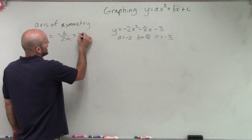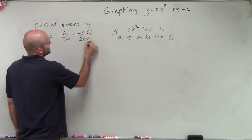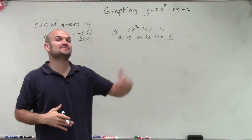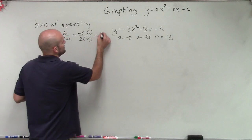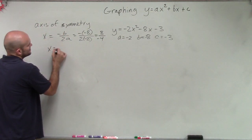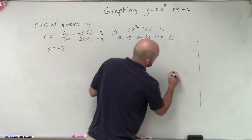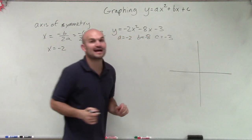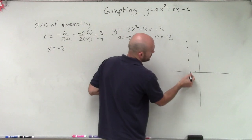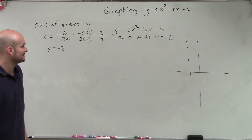So we have the opposite of negative 8 divided by 2 times negative 2. Notice it's opposite of b — since b is negative, it's opposite of negative — which makes this positive 8 over negative 4. So therefore, my axis of symmetry is x equals negative 2. Now on my graph, I'm going to plot my axis of symmetry at negative 2, which is a vertical line right there.